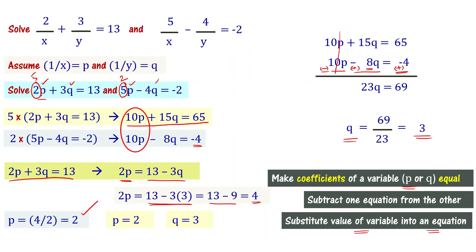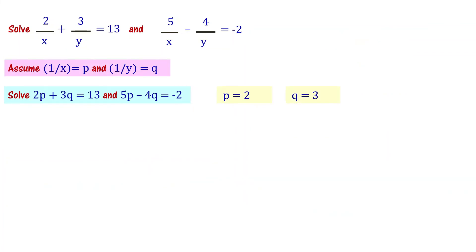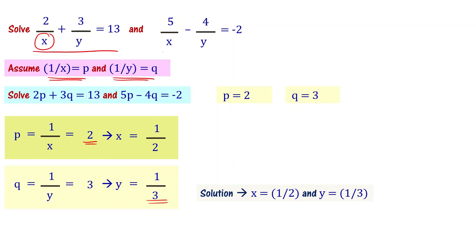By solving the pair of linear equations, we got pq values. Now we need to find xy values. Since 1 by x equal to p and 1 by y equal to q, p equal to 1 by x equal to 2, so x becomes 1 by 2. x equal to 1 by 2. We got x value. q equal to 3, so y becomes 1 by 3. So what are the solutions? x equal to 1 by 2 and y equal to 1 by 3 is the solution to the given pair of nonlinear equations.